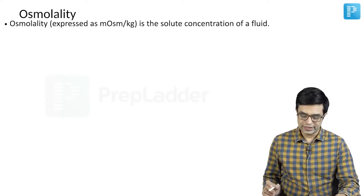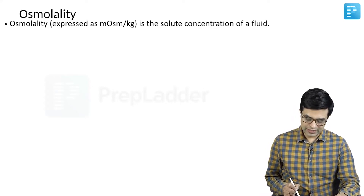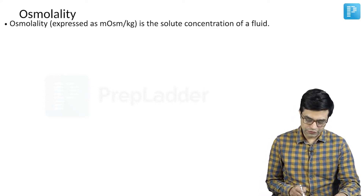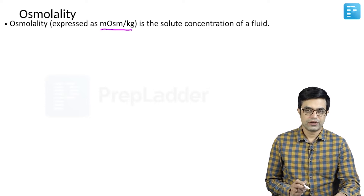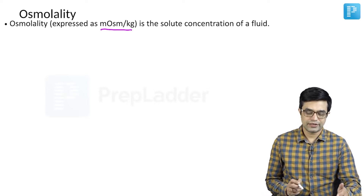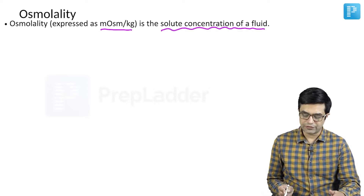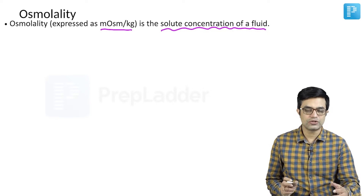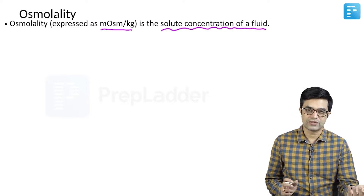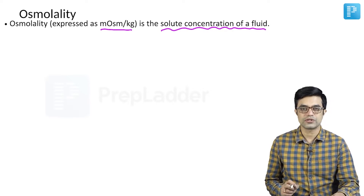What exactly is osmolality? It is expressed in units of milliosmoles per kg. Osmolality refers to the solute concentration of a fluid — how many solutes are present in a fluid. That is what you call osmolality.